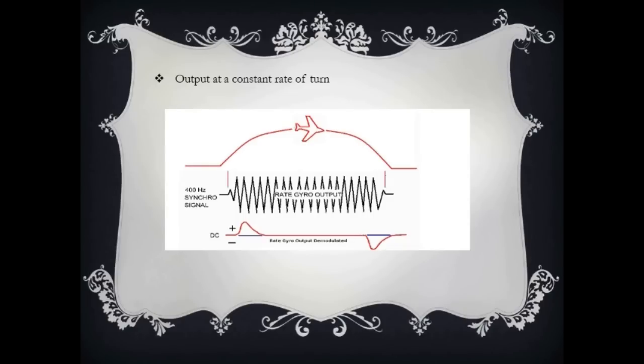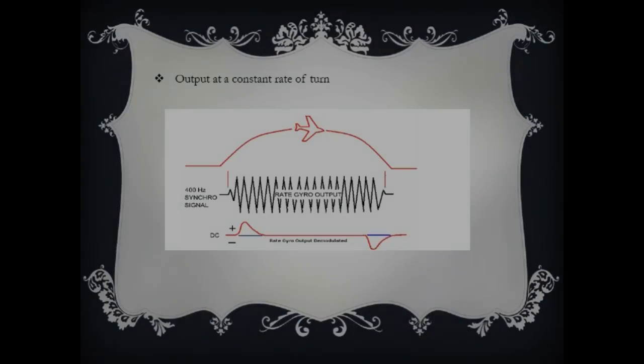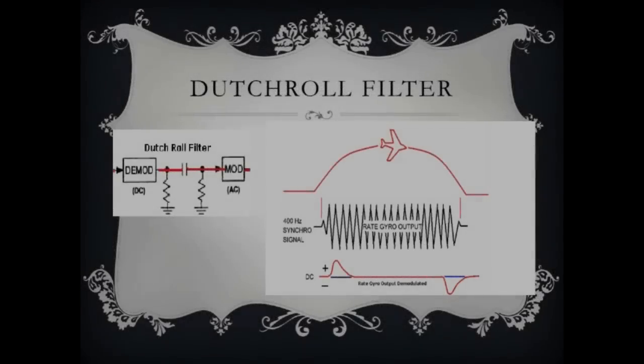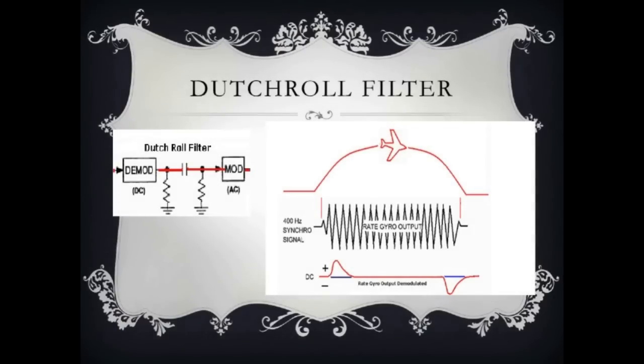Keep in mind that the rate gyro output demodulated is produced by the Dutch roll filter. Do you guys know how the Dutch roll filter looks like? Well, you're in luck. Let me show you. This is the Dutch roll. Calm down, bro.